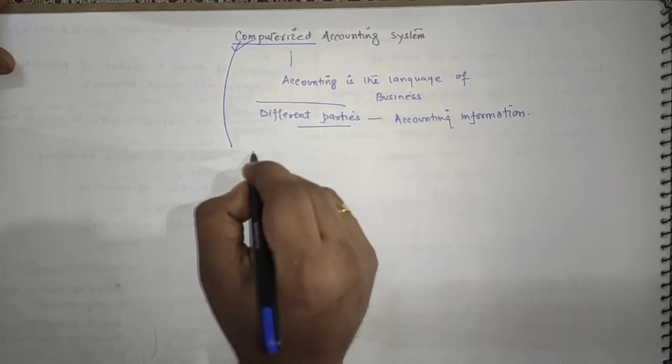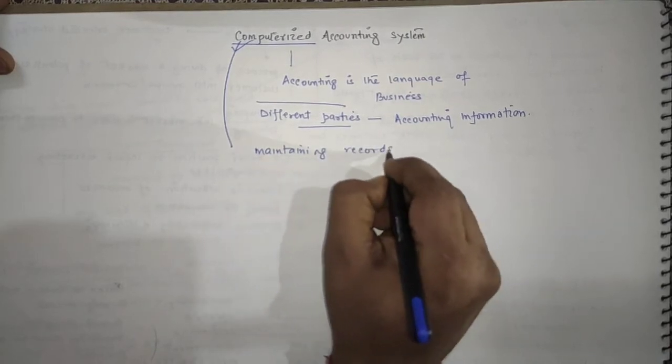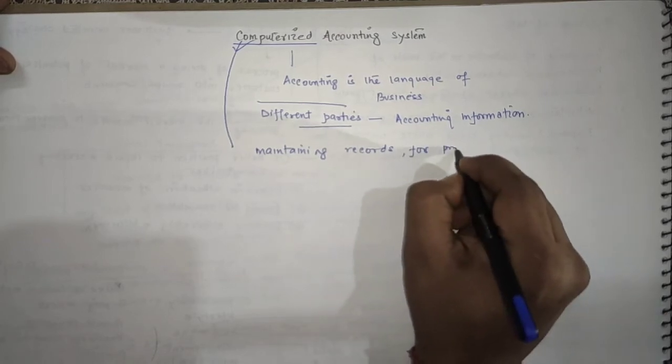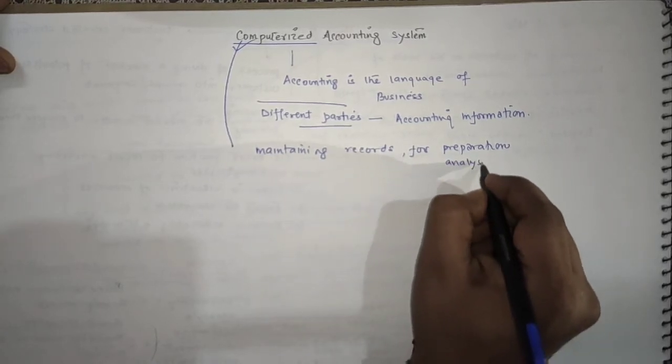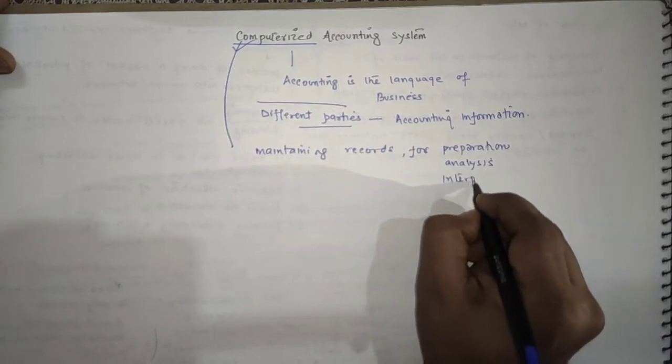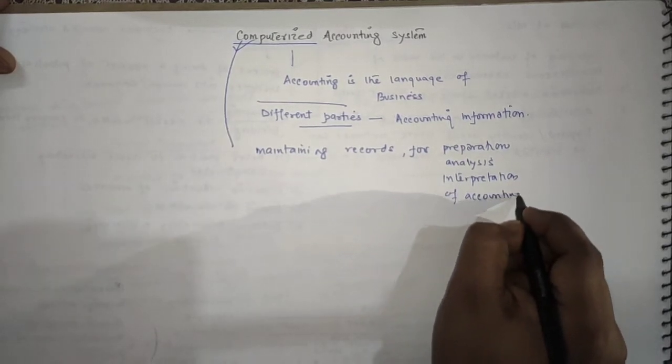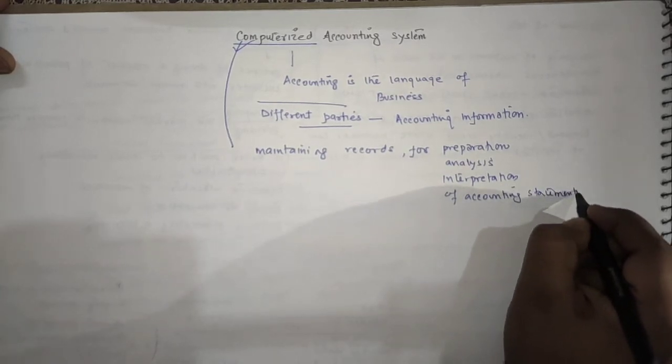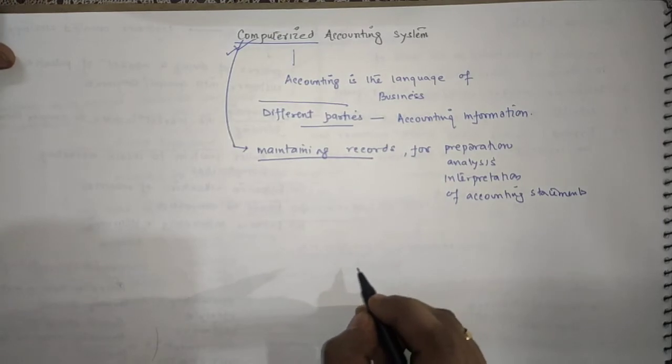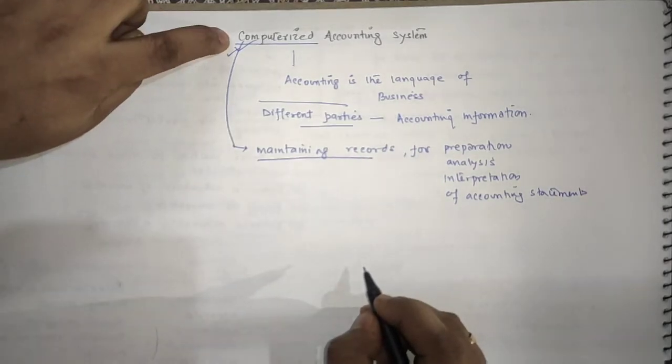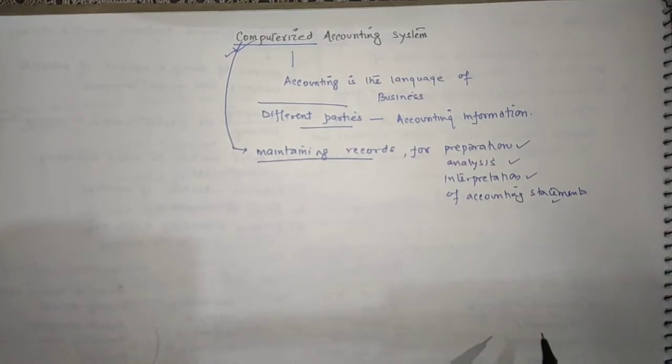In this way, computerized accounting system plays a very important role in maintaining records and for preparation, analysis, and interpretation of accounting statements. This monitoring form is known as computerized accounting system. Ultimately, computer is helping in preparation, analysis, and interpretation of the financial statement or the accounting statement.